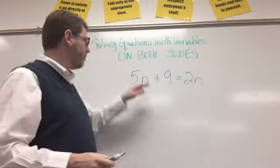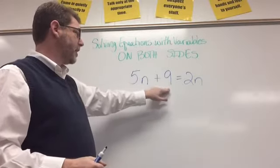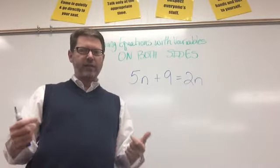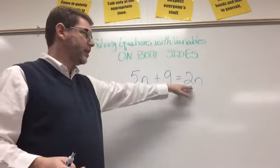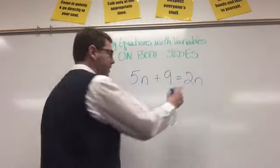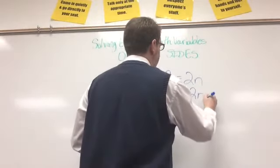For the next example we have 5n plus 9 equals 2n. Just like we said before, start with my smallest variable. The smallest variable is 2n. It's positive right now. So I'm going to do the opposite. That would be subtract 2n from both sides.